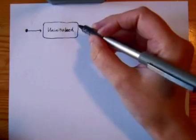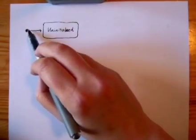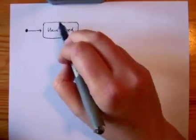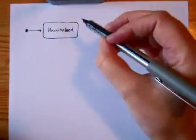Suppose we've got our component here. When it's first created, this is a start marker, when it's first created its initial state is something we're going to call uninitialized. It's not ready for use yet.